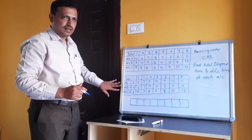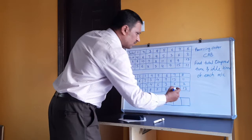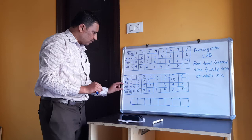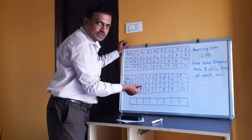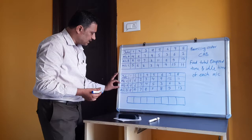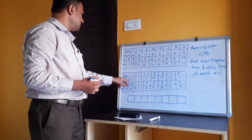After rearranging the table, we have to check whether the condition for converting to a 2-machine problem is satisfied or not. We need to find the least processing time on each machine.